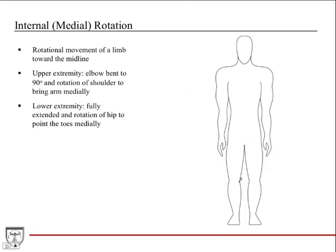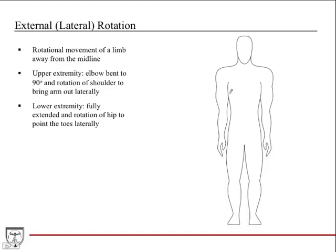Internal rotation, also known as medial rotation, is a rotational movement of the limb that applies to the upper and lower extremities. For the arm, you rotate your hand inward. Internal rotation of the upper extremity involves the shoulder joint; in the lower extremity it involves the hip joint, rotating inward so the toes point medially. External rotation, also known as lateral rotation, is the opposite — rotating the arm outward so the palm faces up, and in the hip rotating so the toes point laterally.